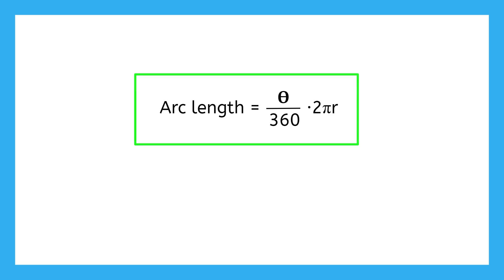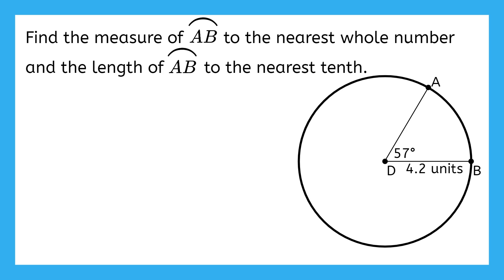Now that we've explored this formula and understand where it comes from, let's try an example problem. This says, find the measure of arc AB to the nearest whole number, and the length of arc AB to the nearest tenth. So, we need to find two things here. Which of these is the easiest to find with the information given to us in the picture? The arc measure is easiest because it's going to match the central angle that it corresponds to. So, what is the measure of arc AB? It's 57 degrees, just like the central angle.